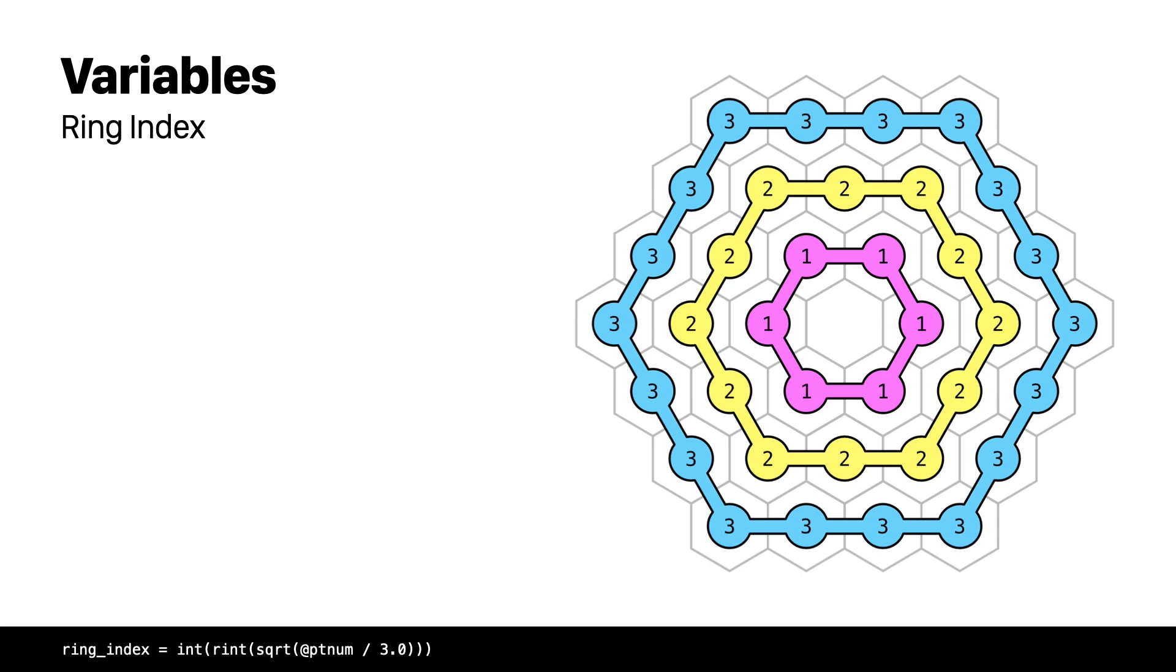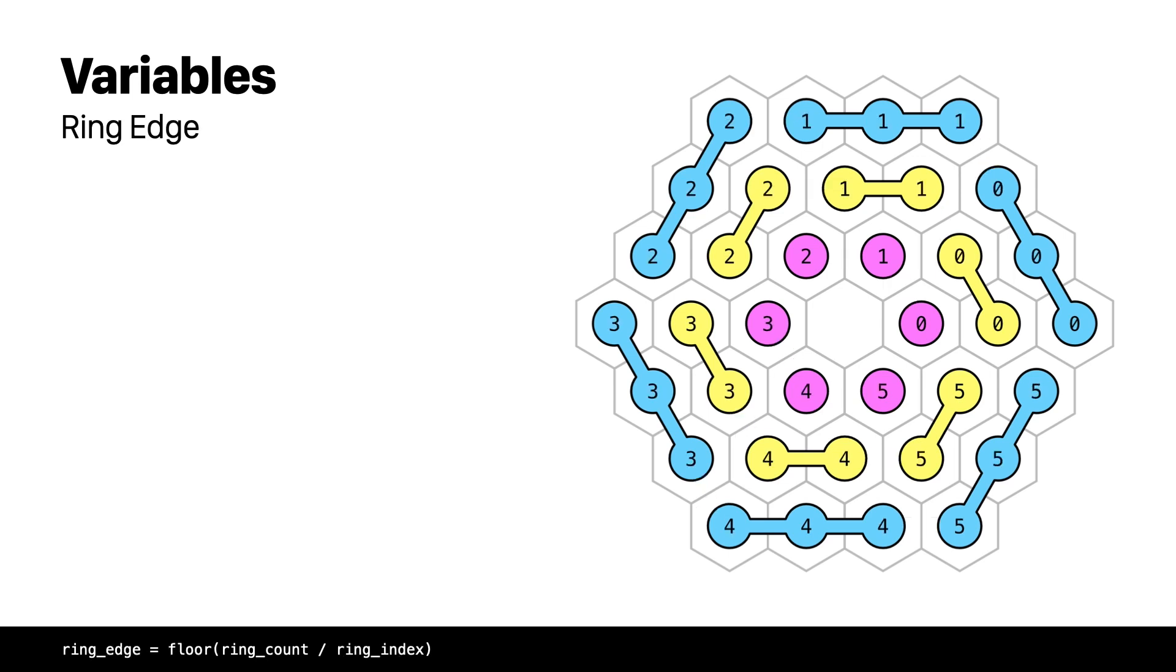The ring index is pretty straightforward and it's the index of each ring. The ring count is a counter similar to the pt-num but starts from zero in each ring. The ring half count is the same as the ring count but divides each ring in two so we get a counter that repeats twice. The ring edge is also a counter that we get when we divide each ring in six equal parts in the same sense that we have the six edges of the hexagon.